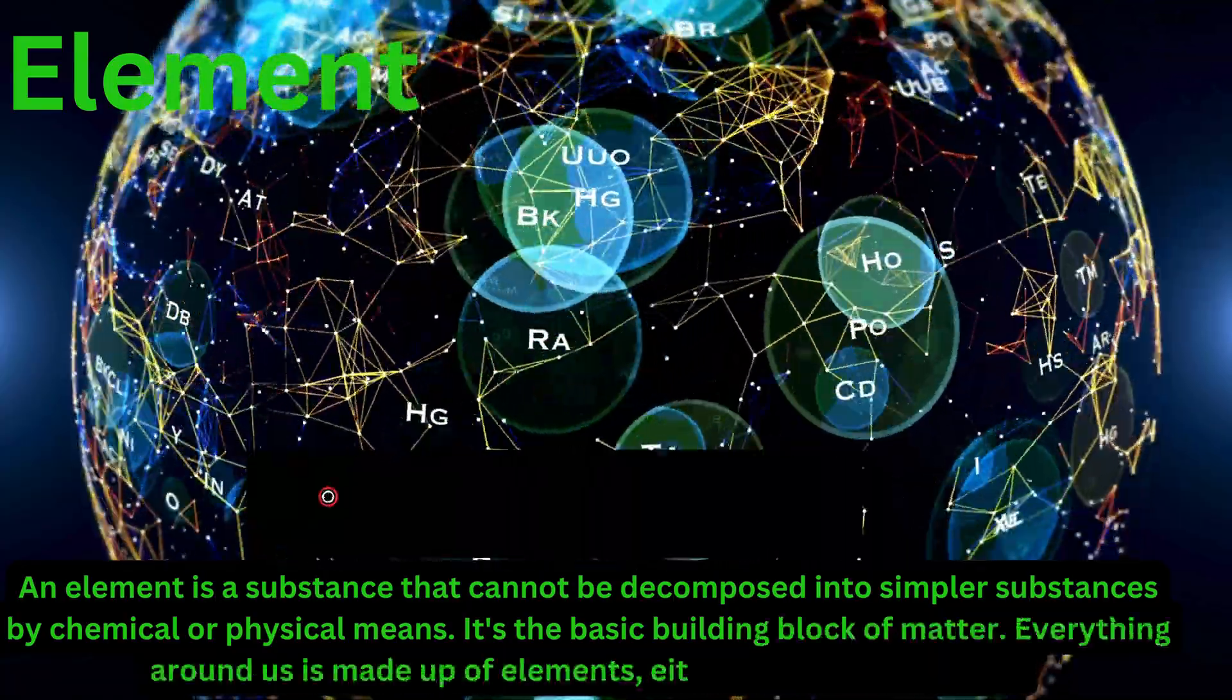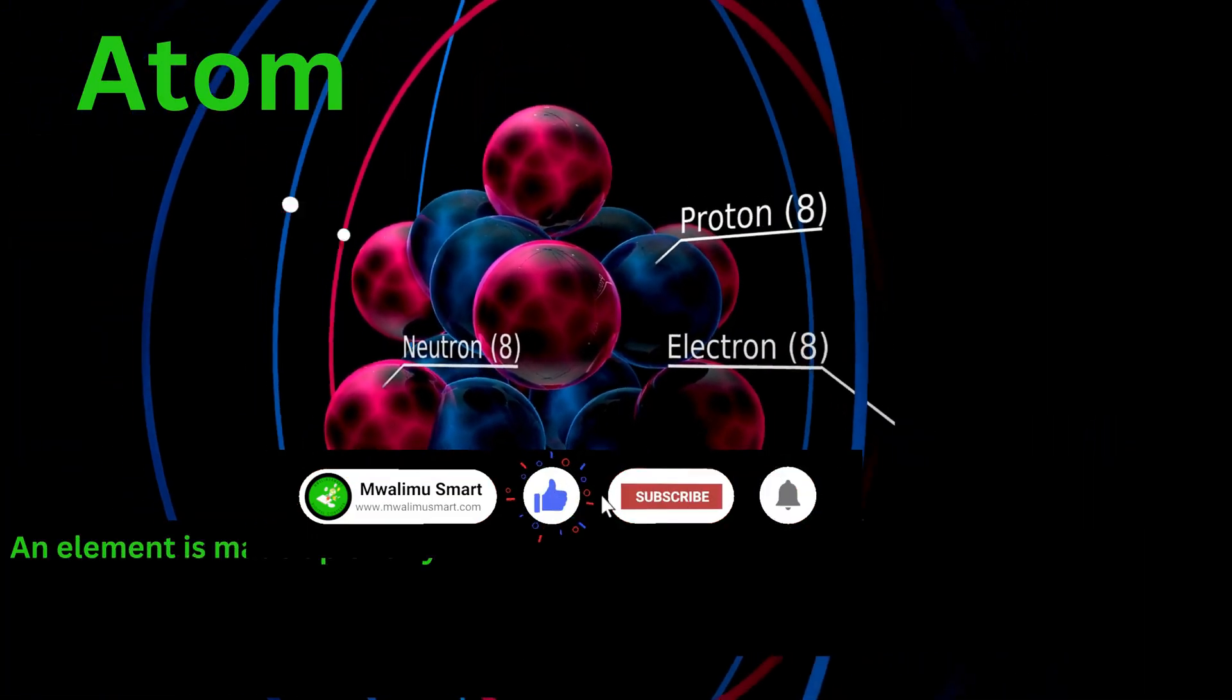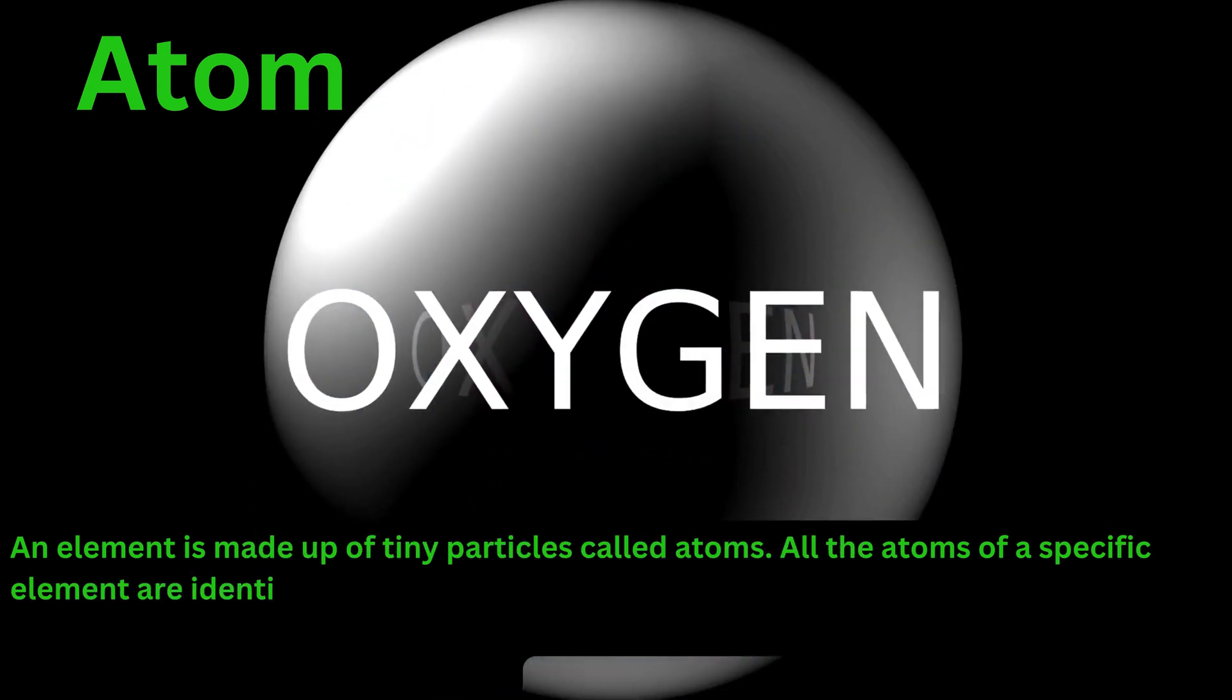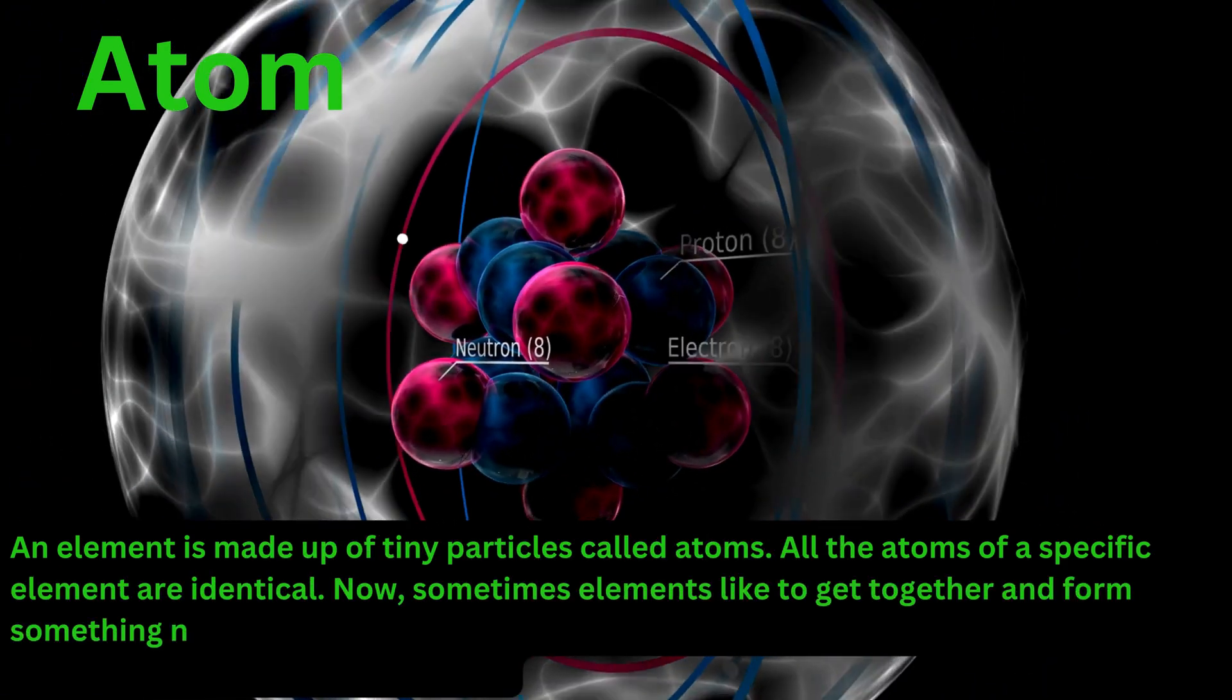An element is made up of tiny particles called atoms. All the atoms of a specific element are identical. Now, sometimes elements like to get together and form something new.